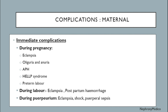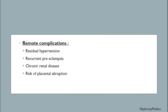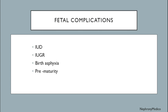Complications — maternal immediate complications during pregnancy: eclampsia, oliguria, anuria, HELLP syndrome, preterm labor, eclampsia, postpartum hemorrhage. During the puerperium: eclampsia, shock, and puerperal sepsis. Remote complications: residual hypertension, recurrent preeclampsia, chronic renal disease, and abruptio placentae.